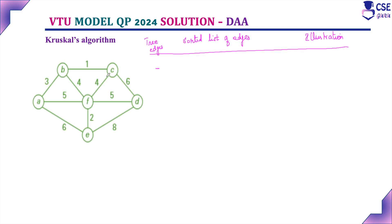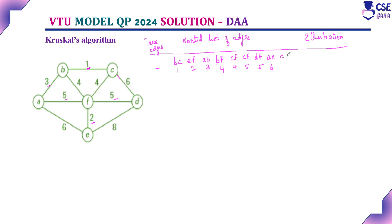For the sorted list of edges for this given graph: the least weight edge is BC with weight 1. Next, EF with weight 2. Then AB with weight 3. For weight 4, there are two edges — BF and CF. When there is a tie, we take alphabetical order, so BF with 4 comes before CF with 4. For weight 5, we have AF and DF — so AF with 5, then DF with 5. For weight 6, there are CD and AE — alphabetically AE with 6 comes first, then CD with 6. Finally DE with weight 8.